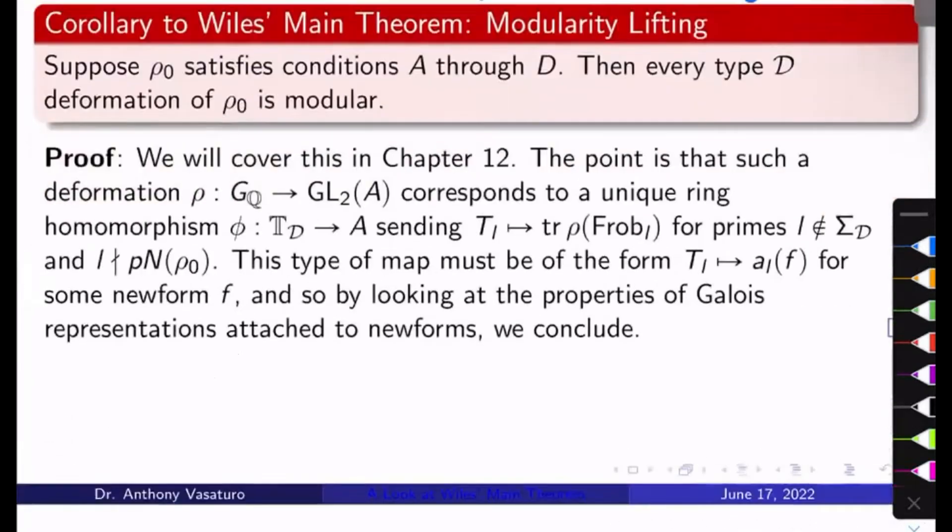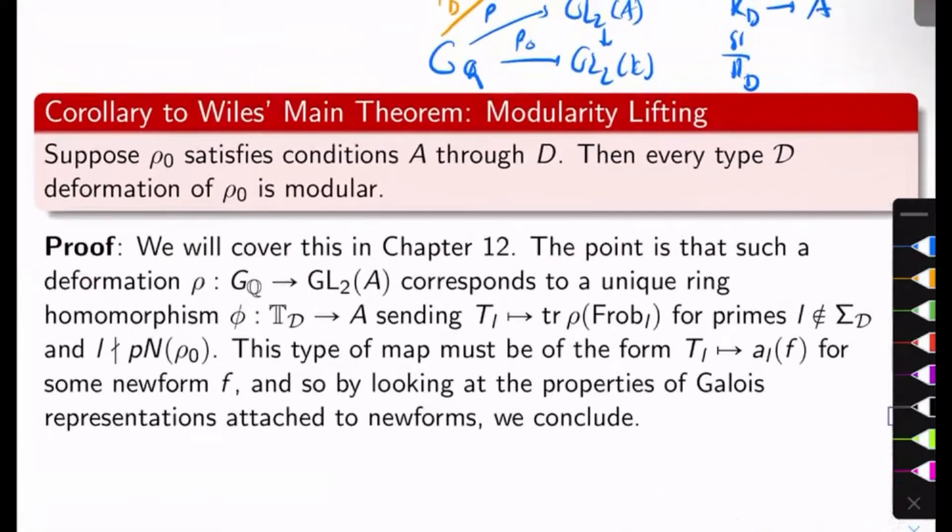So the key point here is if you have a mod P Galois representation satisfying conditions A through D, then every single type D deformation of it for any deformation type D is modular. And we'll look at a sketch of a proof of Wiles' main theorem next time. Thanks for watching.